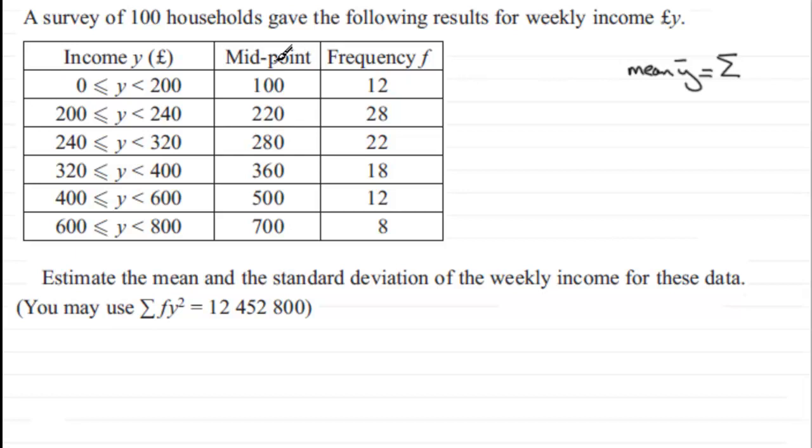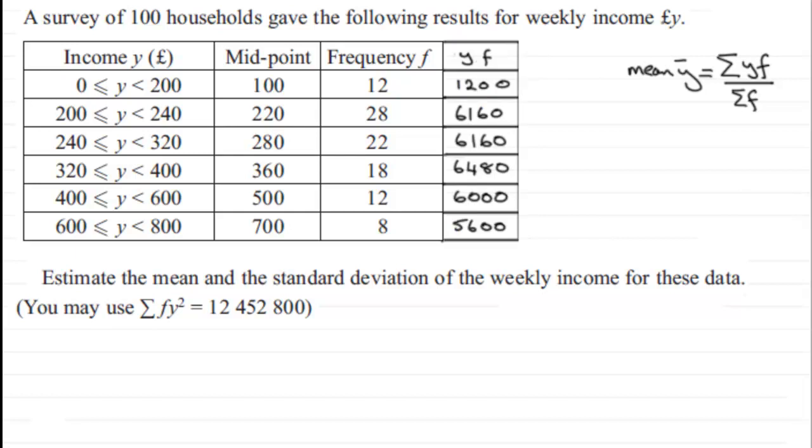That's Y value times the frequency, and divide this by the total frequency. That would mean drawing up another column here. I've actually done that earlier, so you can see that if you check out 100 times 12 you're going to get 1200, and so on all the way down through here.